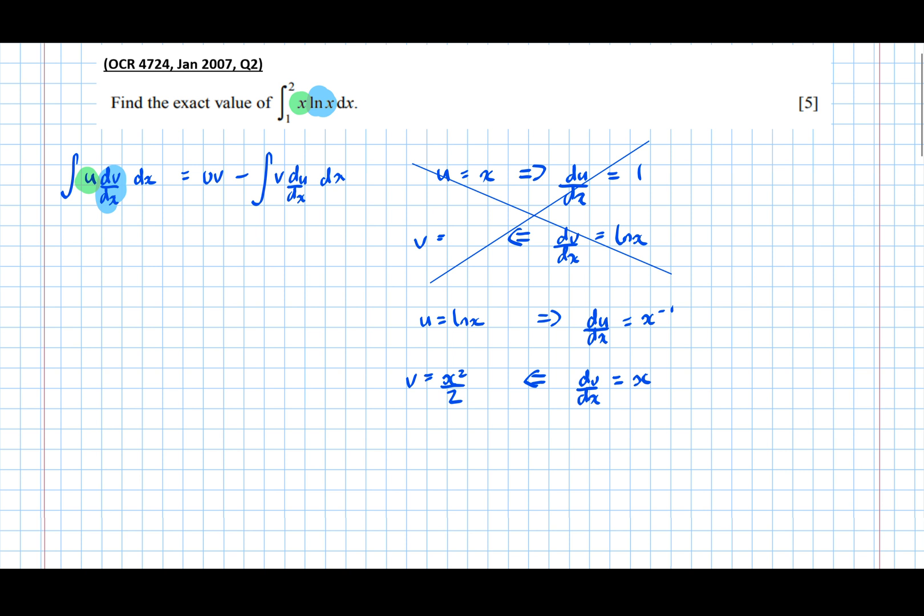So now substituting those into the formula, we get I for integral equals uv, so x squared over 2 ln x, u times v, minus the integral of v times du by dx with respect to x.